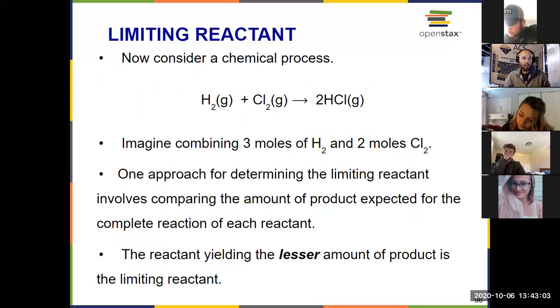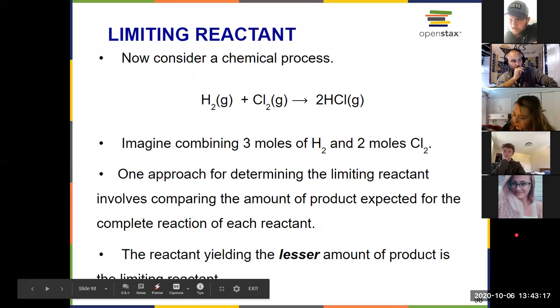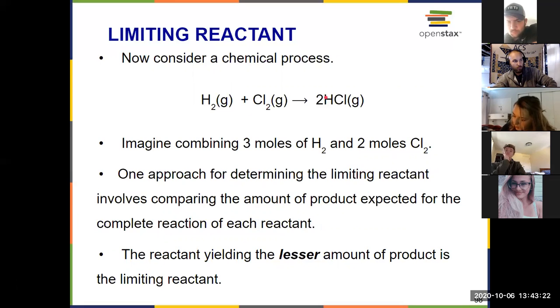So now to see this with an easy chemical reaction, consider a chemical process. A reaction between hydrogen gas and chlorine gas to produce gaseous hydrogen chloride. First thing I need to check is, is the reaction balanced? Two hydrogens, two hydrogens, two chlorines, a coefficient of two chlorines. Yep, everything's balanced. Two of each on the reactant side and the product side. So if I have a theoretical situation where I combine three moles of hydrogen gas and two moles of chlorine gas, what's going to run out first?